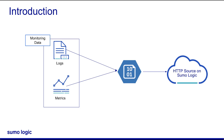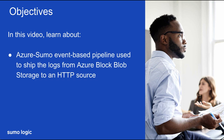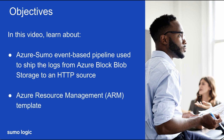This solution can be helpful for monitoring Azure services that do not support exporting logs to Azure Monitor — for instance, Azure Network Watcher. This video will describe the Azure-to-Sumo event-based pipeline that Sumo Logic creates to ship the available logs from Azure Block Blob storage to an HTTP source on a hosted collector in Sumo Logic. This video will also explain the Azure Resource Management, or ARM, template that you can use to build most of the components in the pipeline.